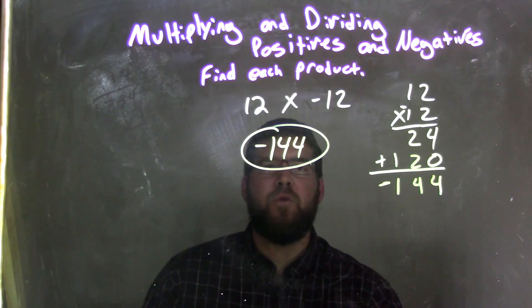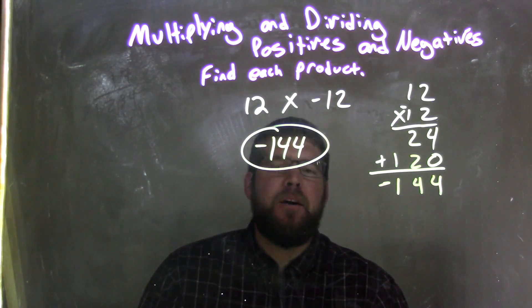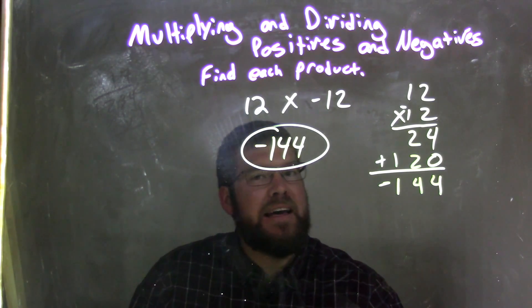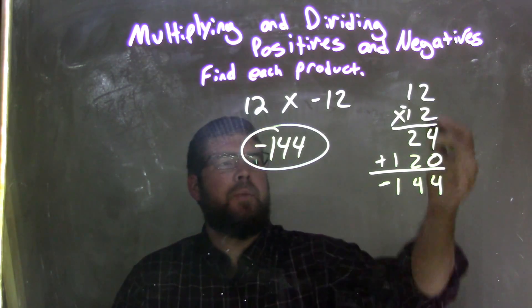So again, let's recap. We saw 12 times negative 12. If we know what that is, 12 squared essentially is negative 144, because a positive times a negative is a negative. But we used a traditional method.